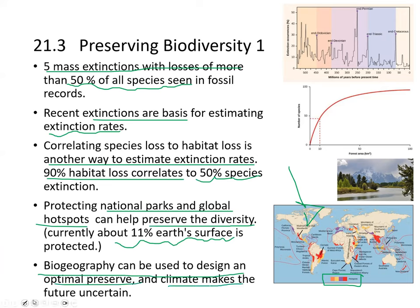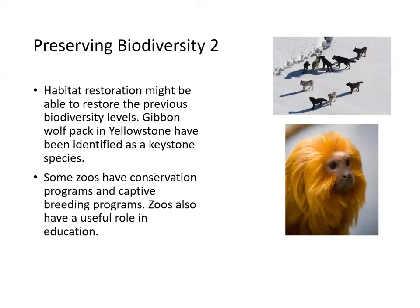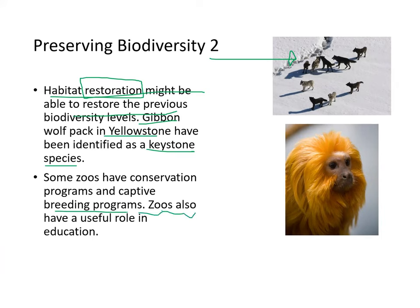Biogeography can be used to design an optimal preserve, though climate makes the future of preserves uncertain. Habitat restoration might also be useful for restoring previous biodiversity levels. A given wolf pack in Yellowstone has been identified as a keystone species, and reintroducing them may help restore habitats. Some zoos also have conservation and captive breeding programs that may help preserve biodiversity.